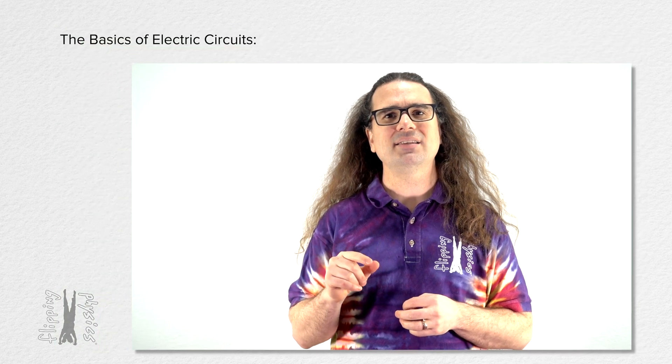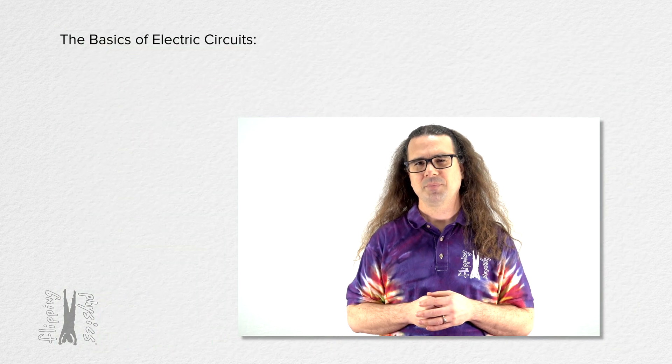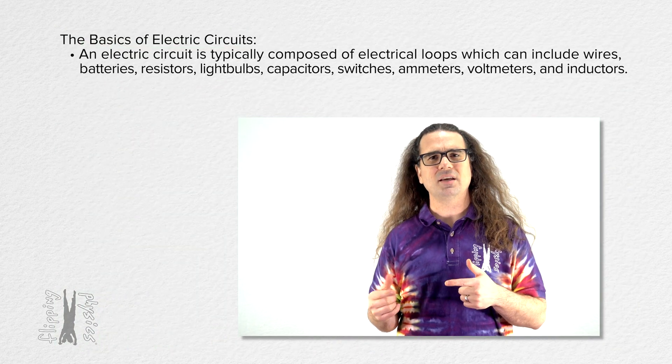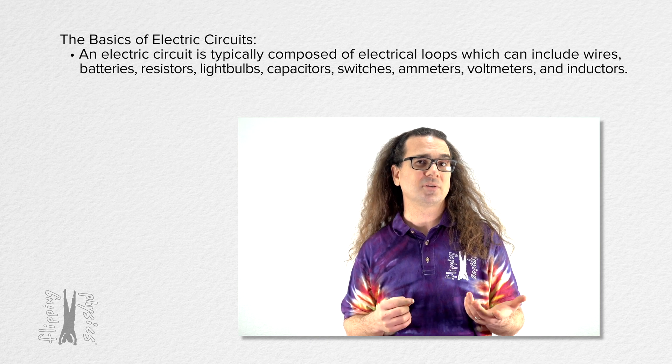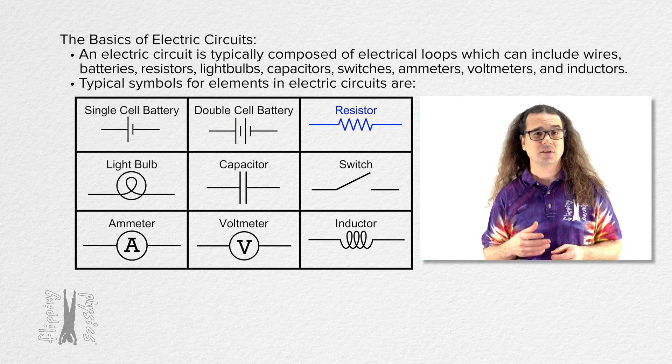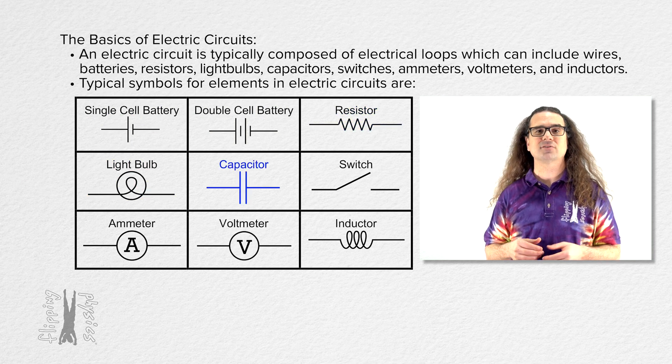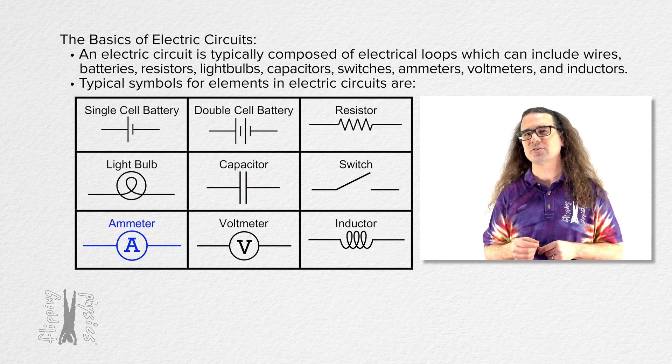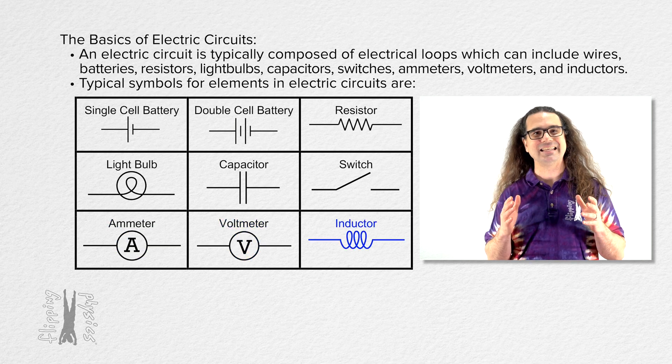Good morning. Let's discuss the basics of electric circuits. An electric circuit is typically composed of electrical loops which can include items such as wires, batteries, resistors, light bulbs, capacitors, switches, ammeters, voltmeters, and inductors.